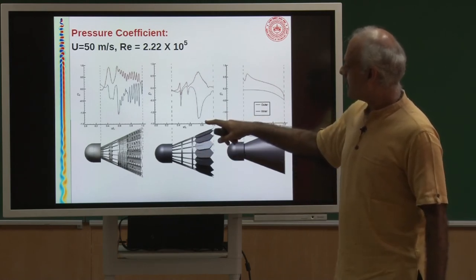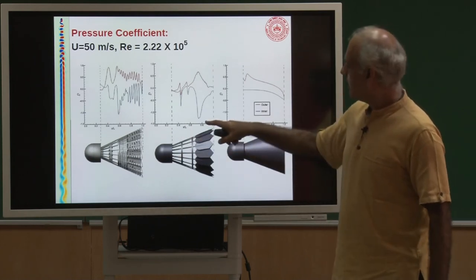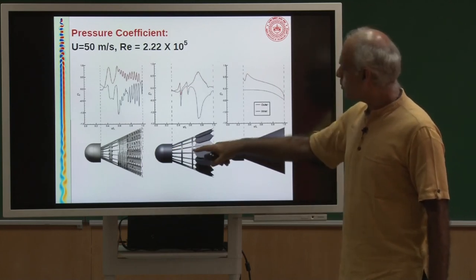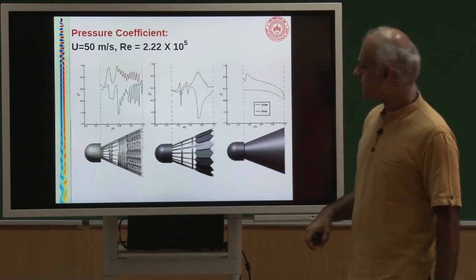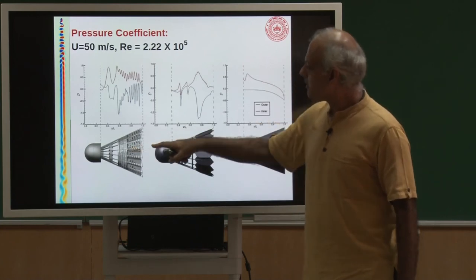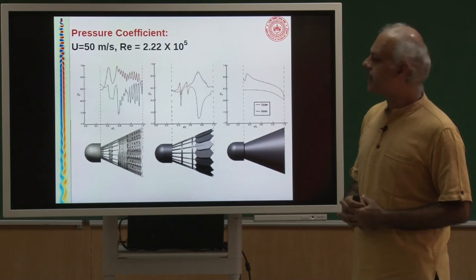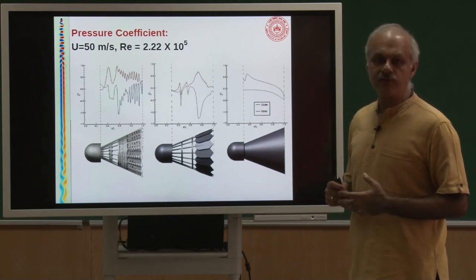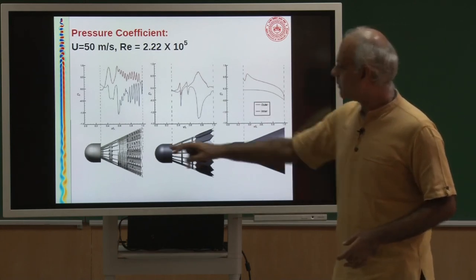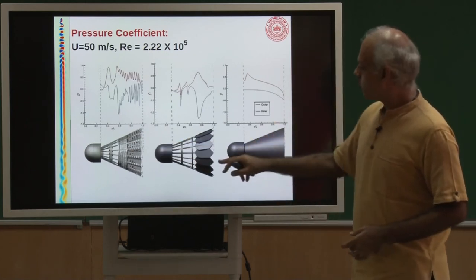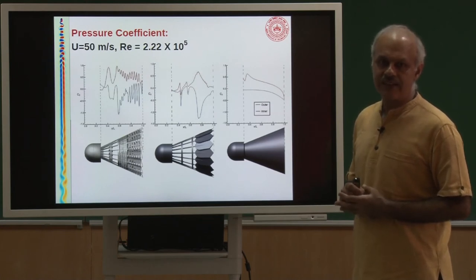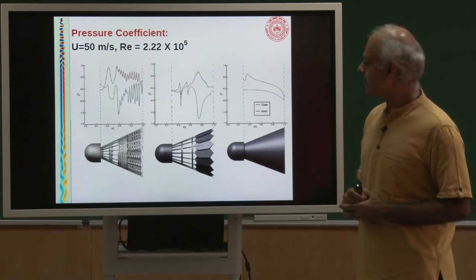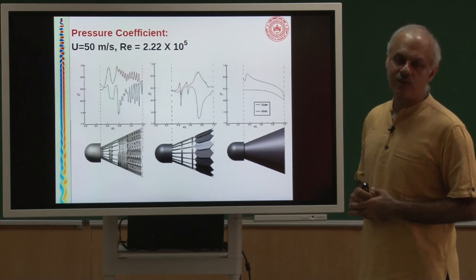The center of pressure is also different between the two shuttlecocks. For the duck feather, the center of the pressure difference is more towards the feathers, away from the center of gravity. For the synthetic shuttlecock, it is more distributed and the center of delta-p is more towards the cork. So when the duck feather shuttlecock gets deformed as it gets older, it has more effect on the dynamics compared to the synthetic, because this is closer to the center of gravity. This means a duck feather shuttlecock requires more skill to handle as it gets old, which is why skillful players prefer it — a synthetic shuttlecock is a little more consistent.